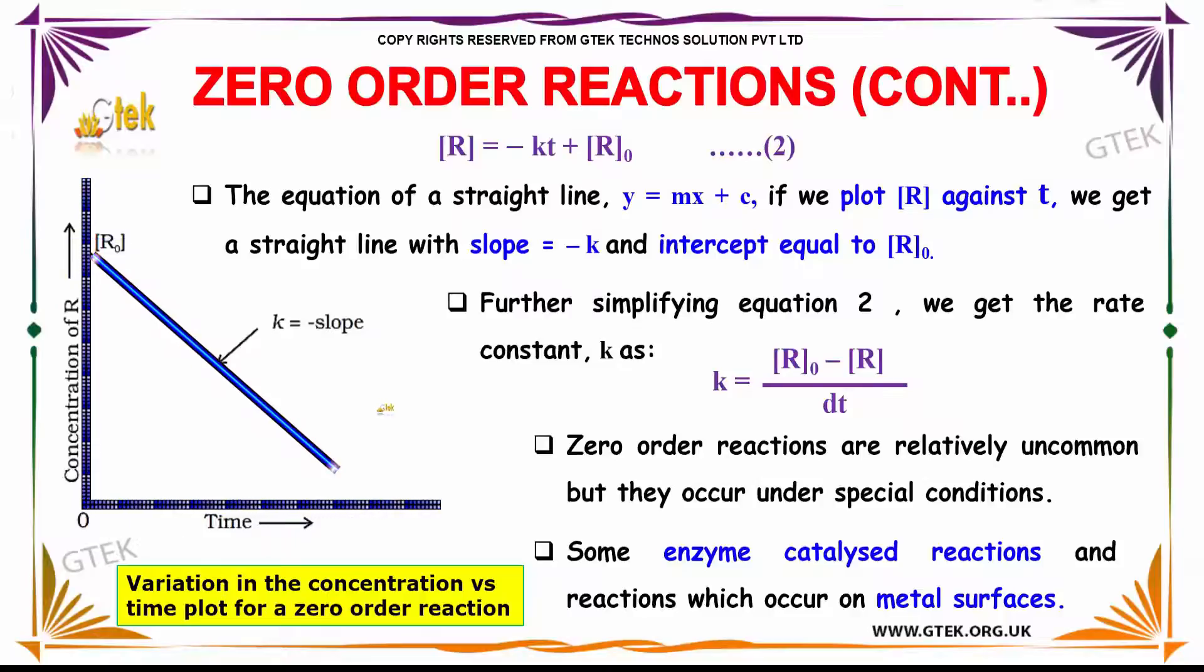Further simplifying equation two, we get the rate constant k as k equals R naught minus R divided by t.